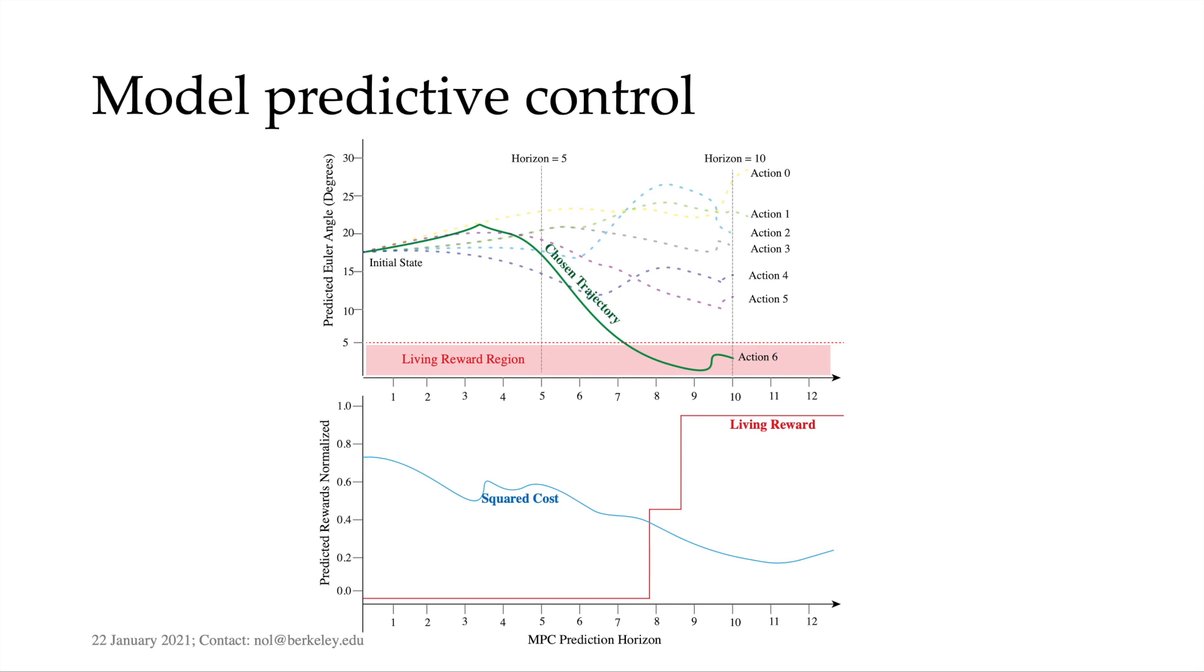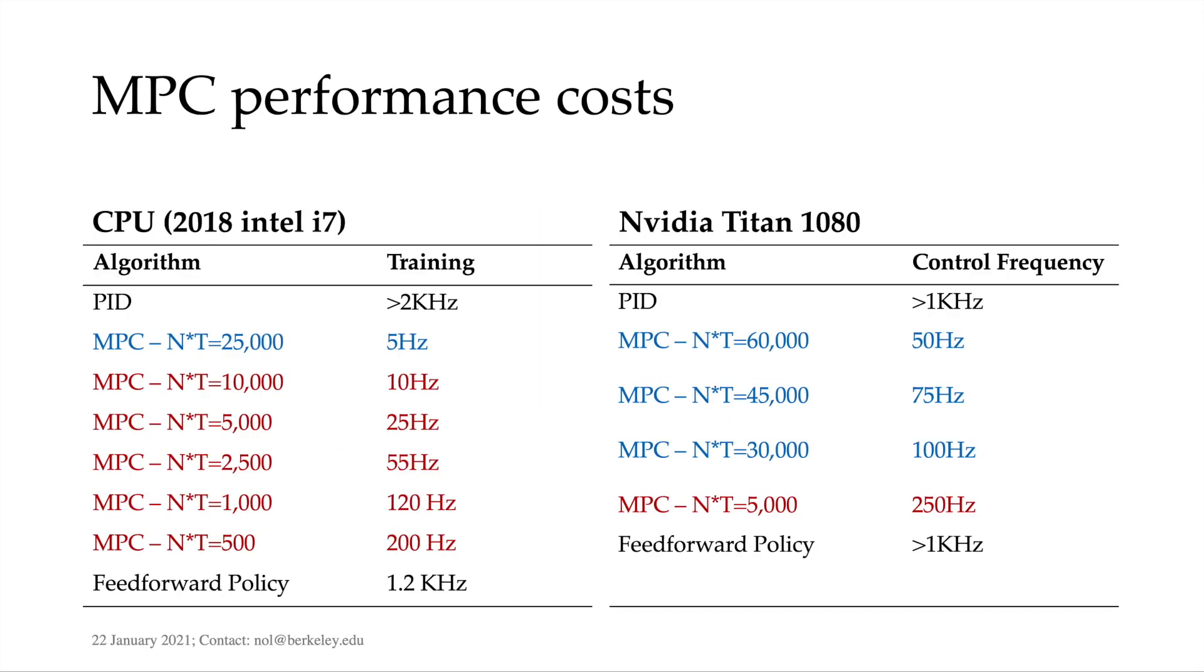Also, MPC incurs almost impossibly high computation cost, requiring an onboard GPU for many robots. Blue are parameter configurations with enough expressivity for low-level control, but the frequencies may not make it.